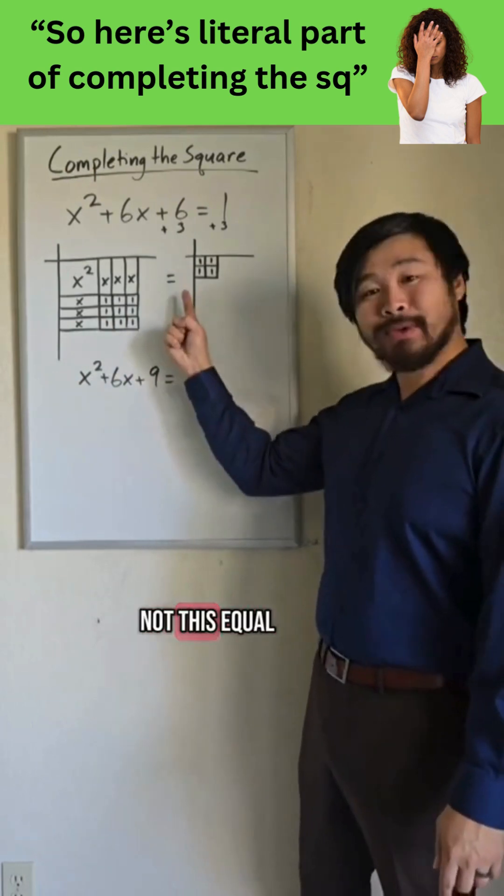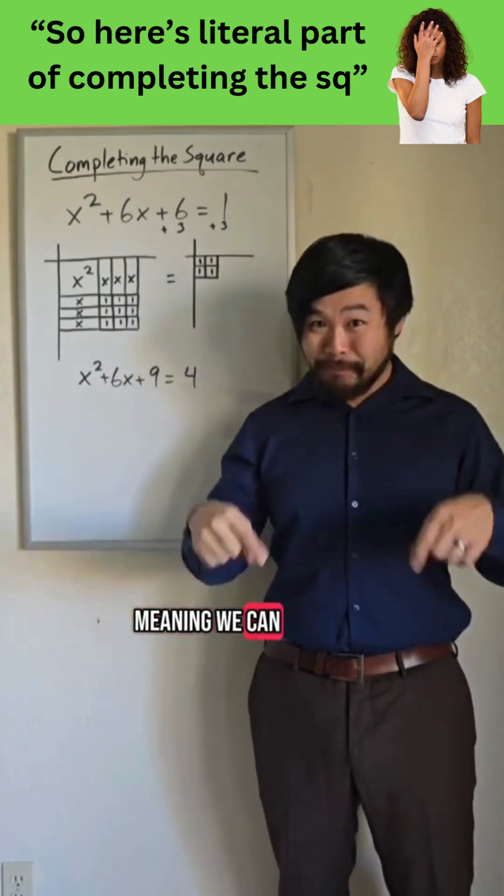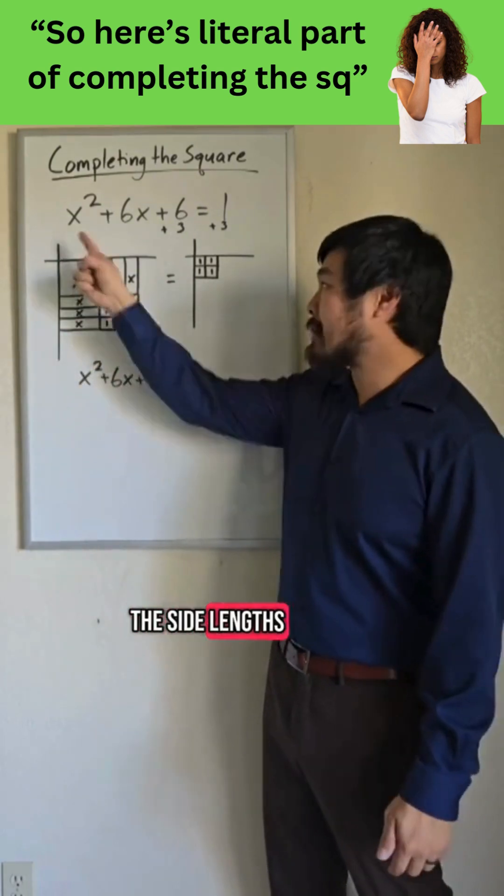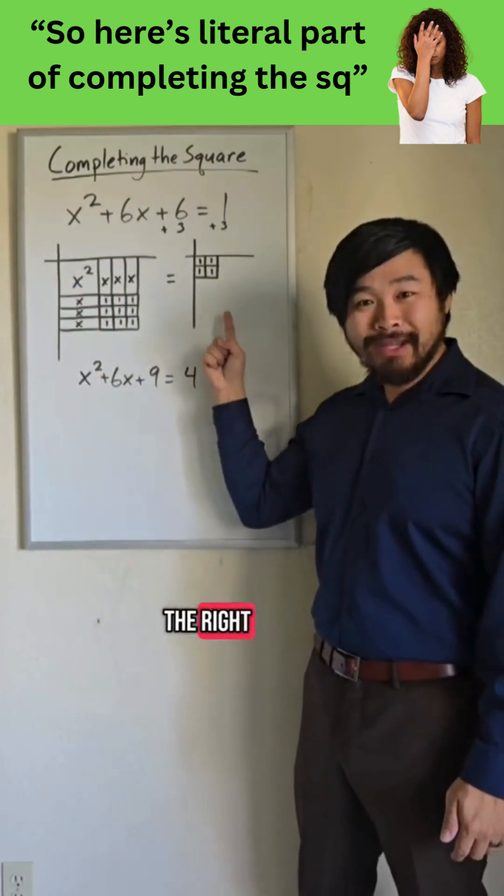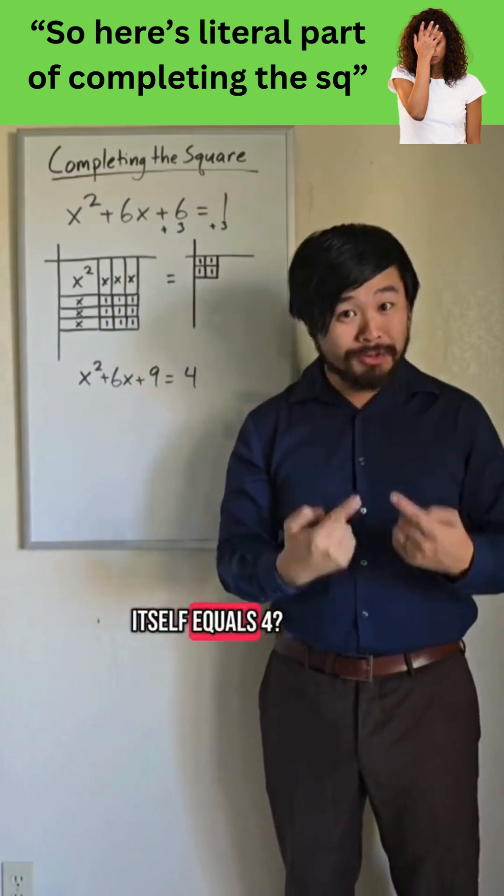Now believe it or not, this equal sign says that these 2 squares are the same size, meaning we can compare their side lengths. So with this square on the left, the side lengths are x plus 3 all around. But what about the square on the right? Well, we have a square with an area of 4. So what times itself equals 4?